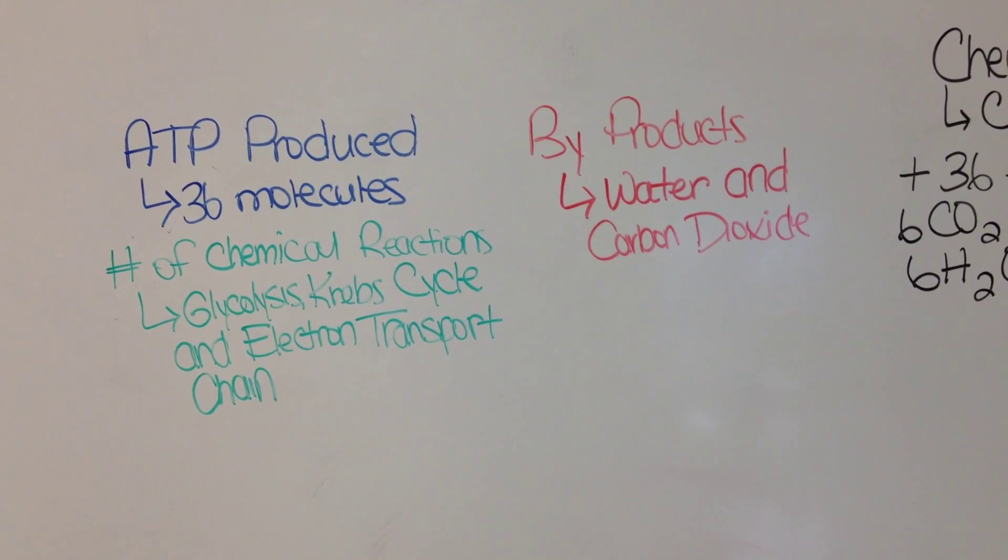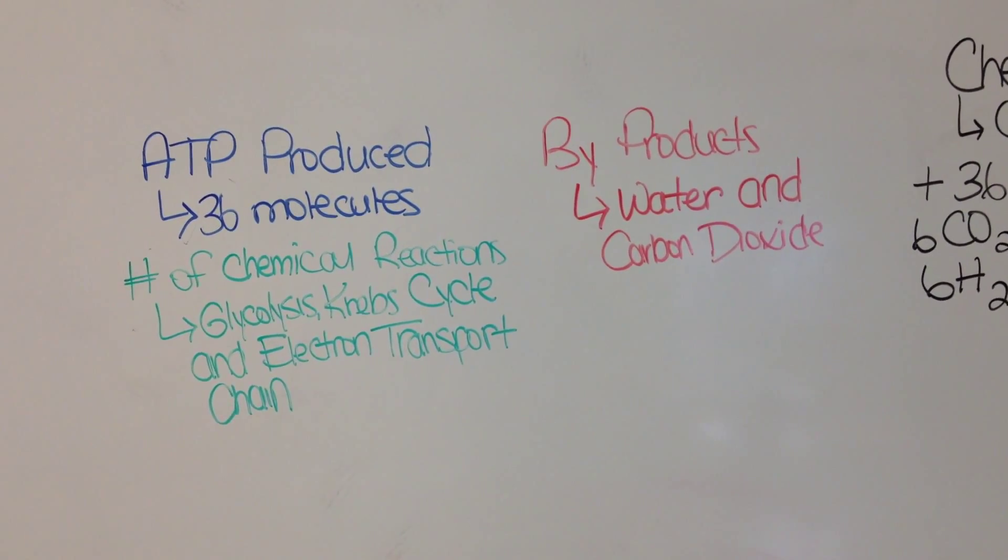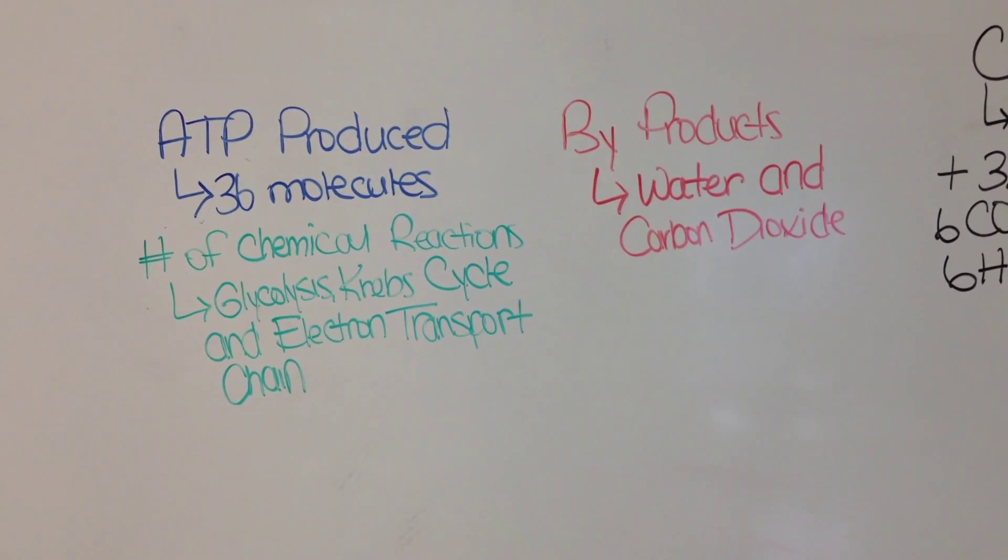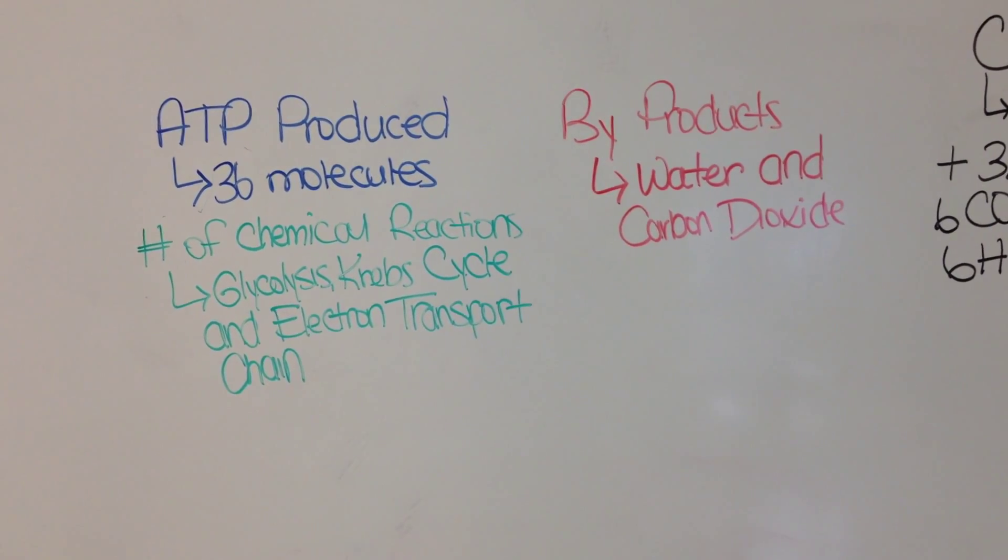Cellular respiration is aerobic. It occurs with the use of oxygen. In cellular respiration, 36 molecules of ATP are produced. There are three chemical reactions: glycolysis, Krebs cycle, and electron transport chain. Byproducts are water and carbon dioxide.